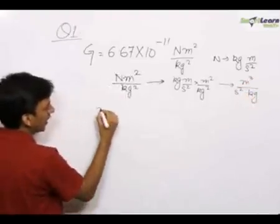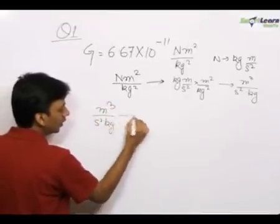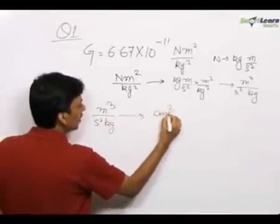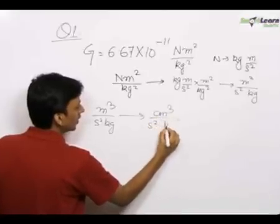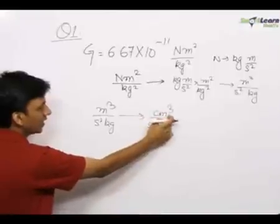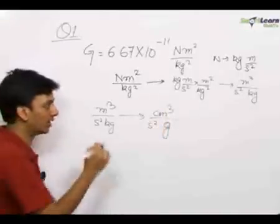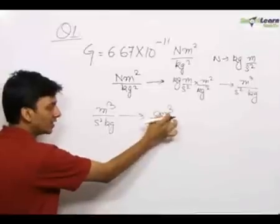So we have to convert this unit of meter cubed upon second squared kg into centimeter cubed upon second squared grams. Centimeter is not the SI unit, it is the unit for length in CGS system.